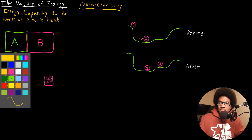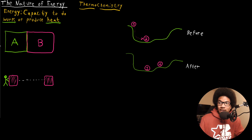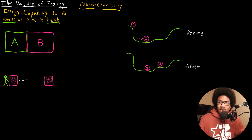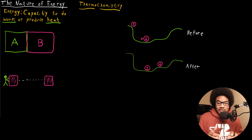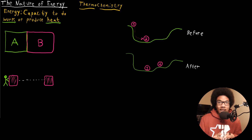These two processes — heat and work — are going to constitute a lot of our discussion about thermochemistry. We'll dive deeper into those in just a few seconds, but I want to continue giving a base level definition of what energy is. One of the most important properties of energy is that energy is conserved. Similar to how we have the law of conservation of mass, there is a law of conservation of energy.